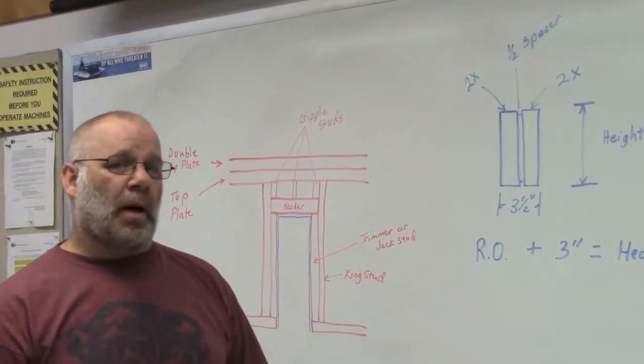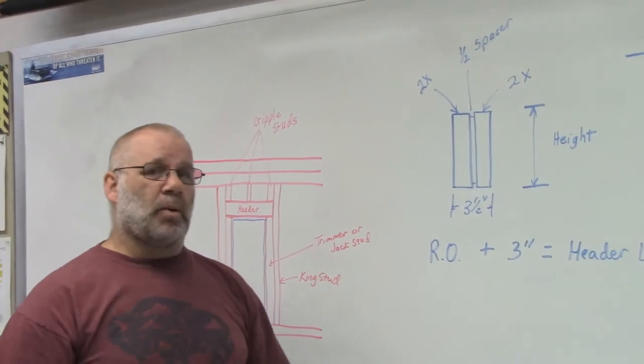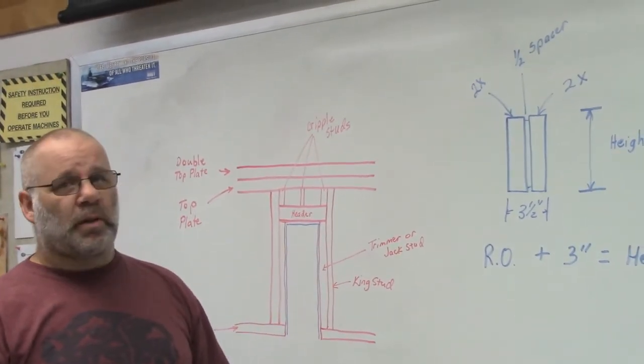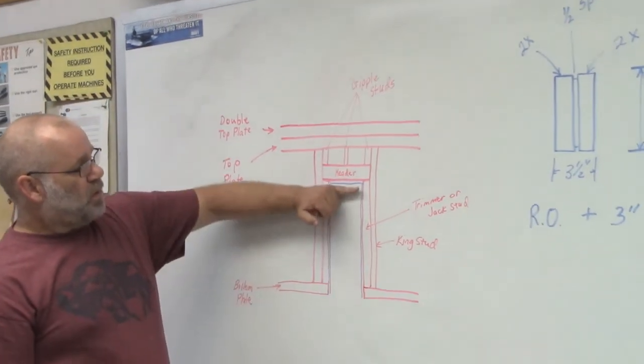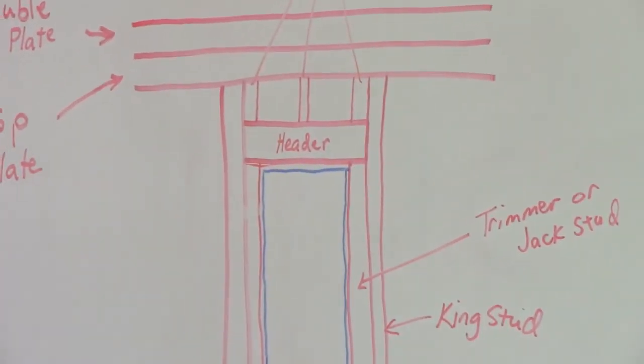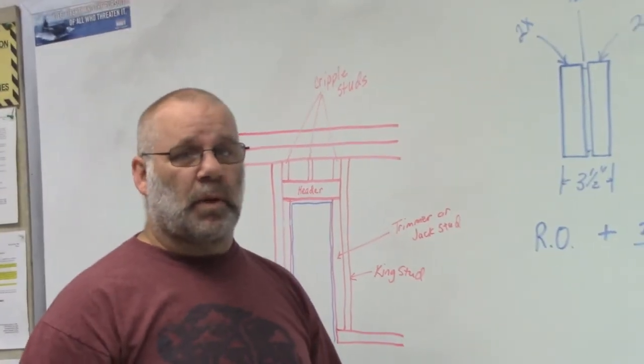it doesn't stick out on the top or the bottom. Then all you have to do is nail your header together, set it on top of your trimmer studs, nail it through the ends, and you have that complete.